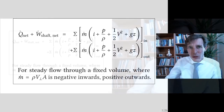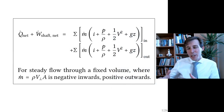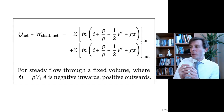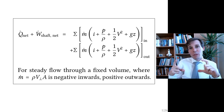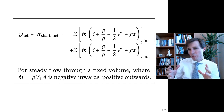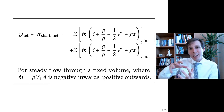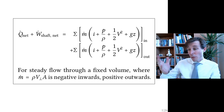The energy balance equation tells you all that can happen to the different forms of energy as the fluid transits through the control volume. This equation is valid for two conditions: one is that the flow is steady, which means as you take different pictures of the flow at different time intervals, all the pictures are the same. And the second condition is that the control volume is not inflating or deflating.